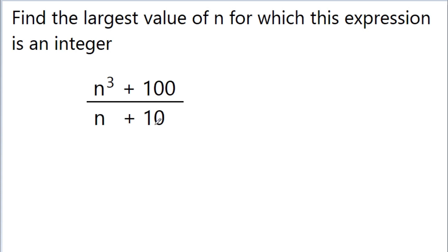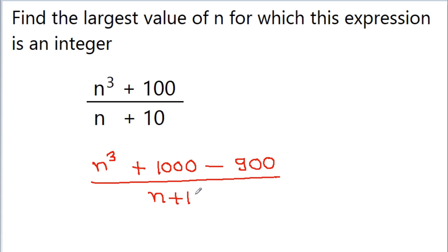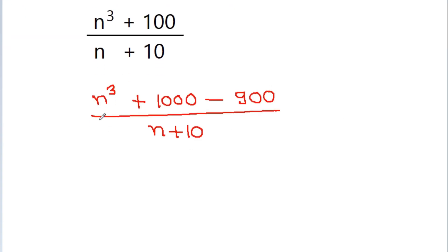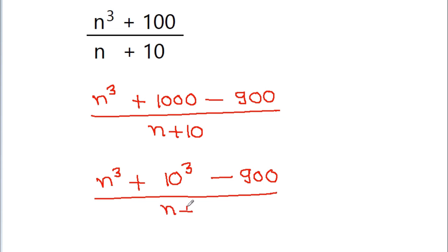So here we have n³. We can write n³ + 100 as n³ + 1000 - 900, divided by n + 10. And now, we can write this as (n³ + 1000) — where 1000 is 10³ — minus 900, divided by n + 10.